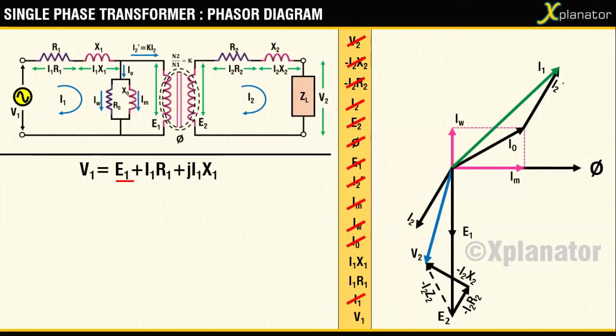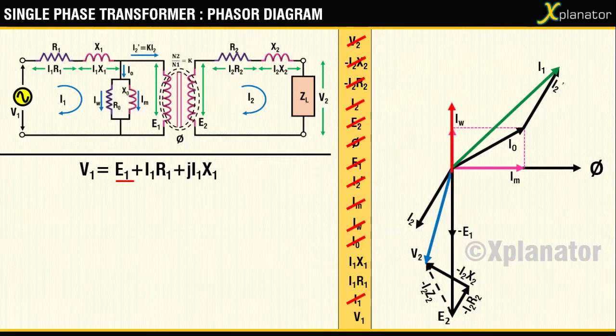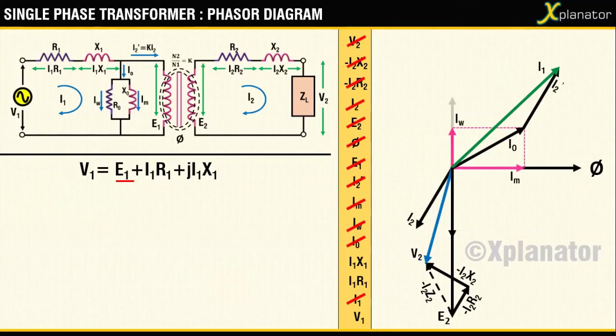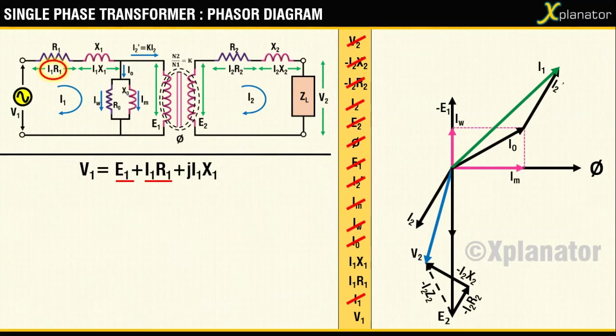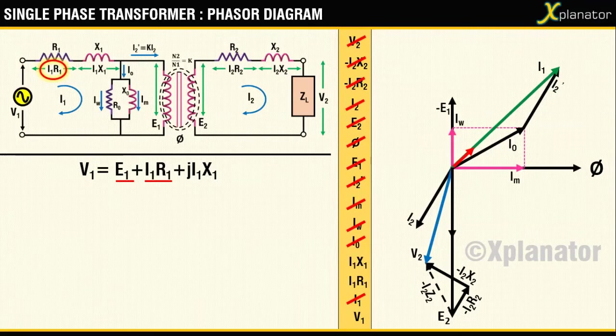For now, the tweak is that you take E1 and shift it upwards. When you do this, you have E1 with a negative sign. The magnitude of E1 remains the same. The next term in the equation is I1R1. It is a resistive drop, hence it will be in phase with I1. Shift it and add it to minus E1.